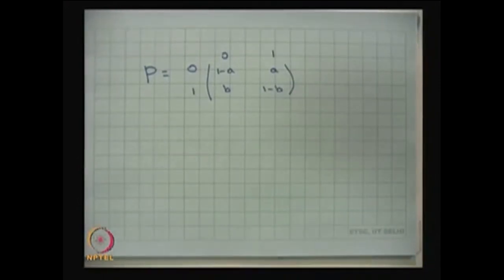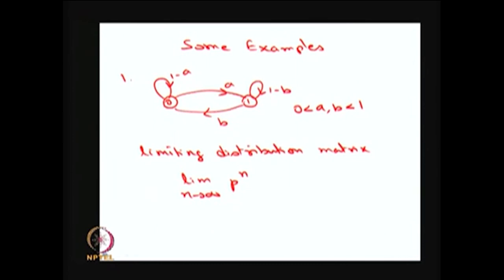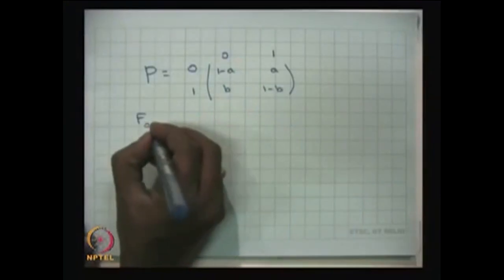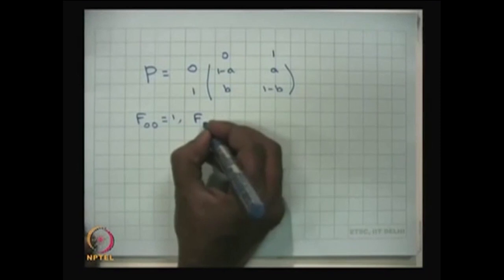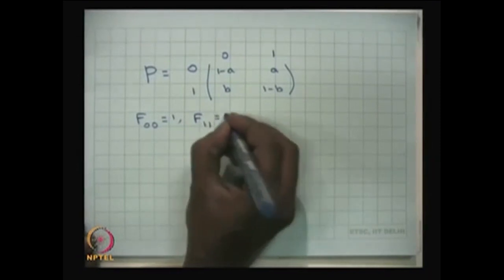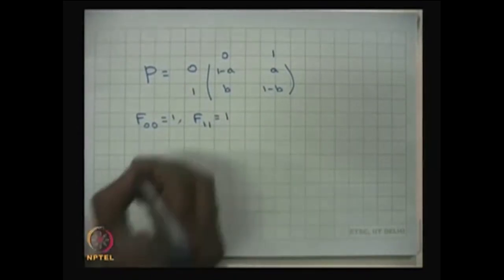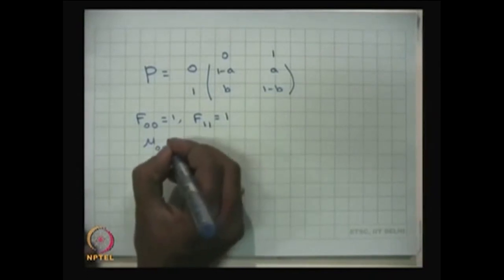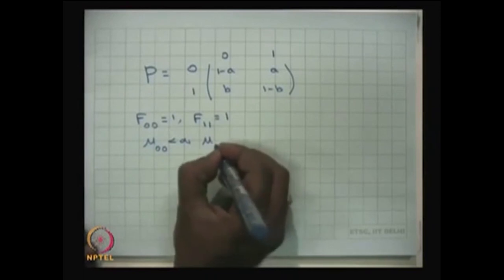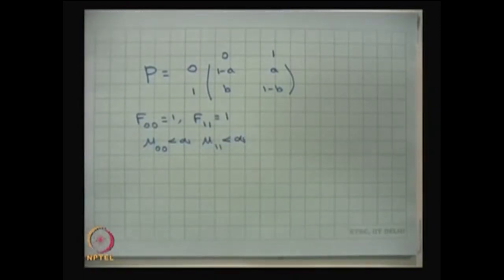From this one-step transition probability matrix, since A and B are in the open interval (0, 1), this is an irreducible Markov chain with finite state space. Therefore, all states are positive recurrent. You can verify this from the classification of states: the probability F equals 1 for both states, confirming positive recurrence. The mean return times μ are finite quantities, confirming positive recurrence.